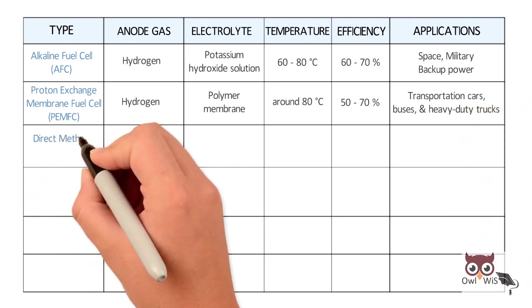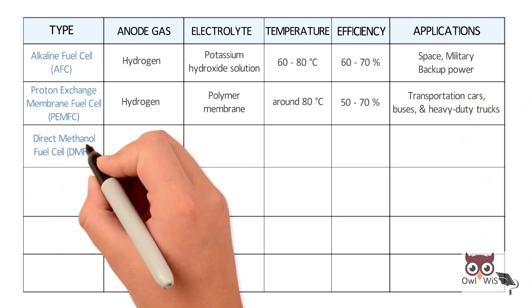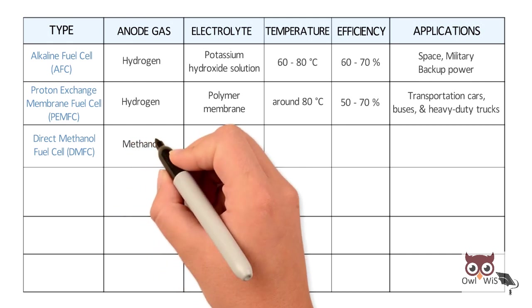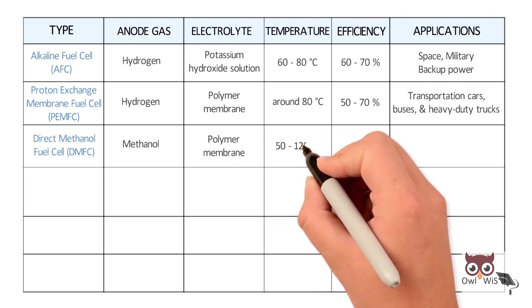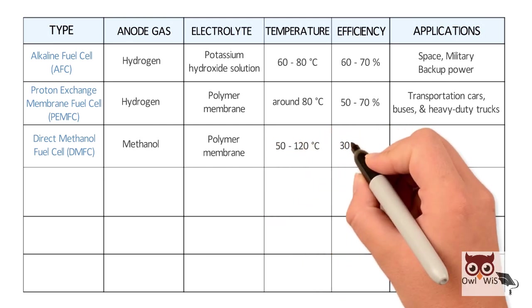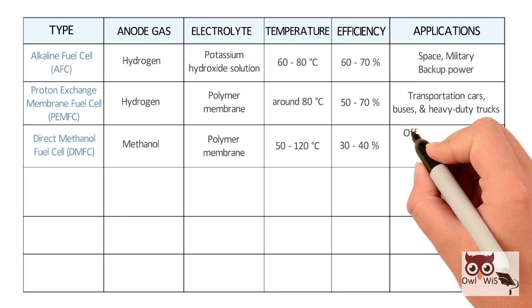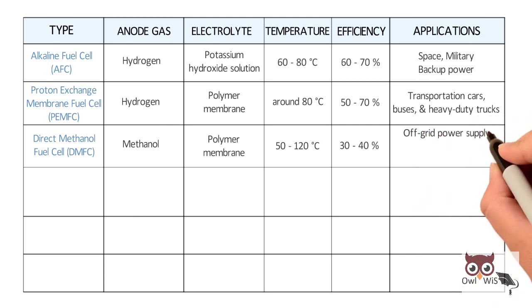Direct methanol fuel cell, DMFC. Methanol is used as anode gas. Electrolyte is polymer membrane. Working temperature is 50 to 120 degree Celsius, with 30 to 40 percent efficiency. Used in off-grid power supply, portable devices and small vehicles.